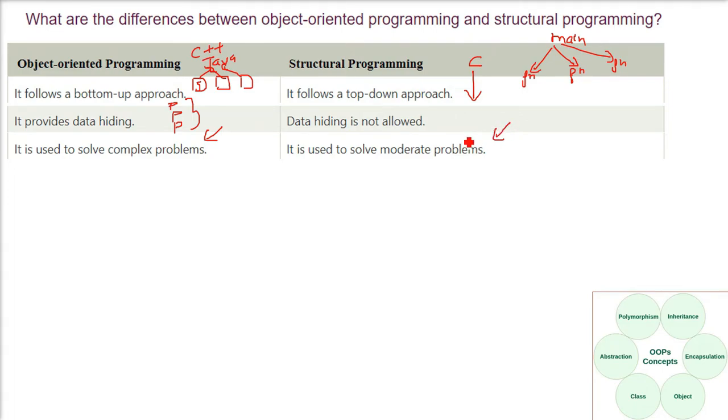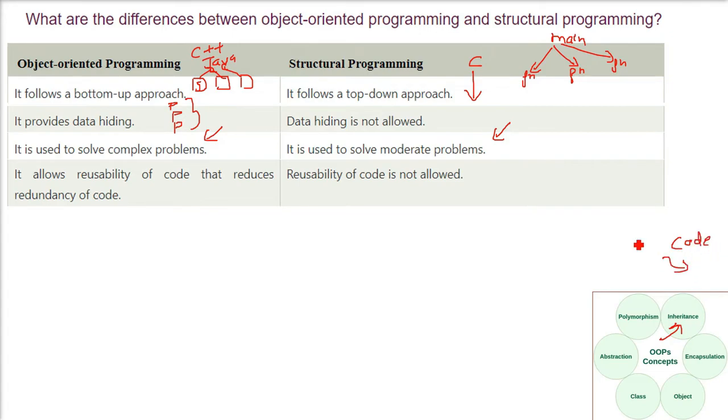Structural programming is not good for complex problems. Object-oriented programming gives you inheritance and other concepts, so it allows reusability of code that reduces the redundancy of code. You don't have to write again and again. Make a class or make a component and you can just use it again and again.